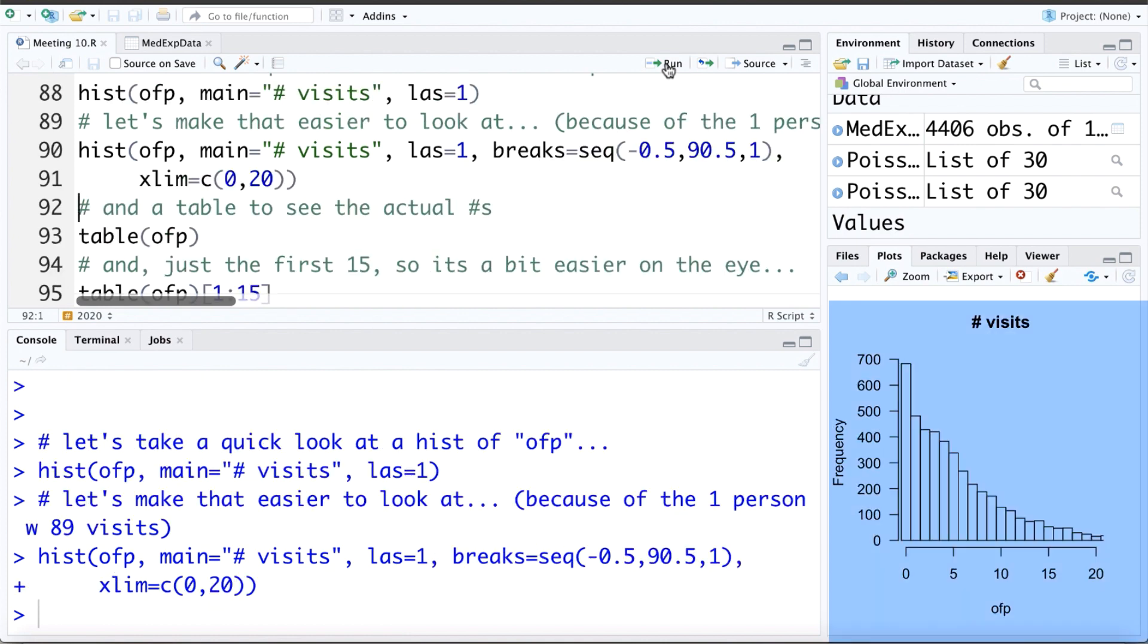Now if we look here, we can see this nice sort of smooth looking curve shape. And then at the zero, we see a big bump, or probably much more zeros than we'd expect for a nice smooth distribution.